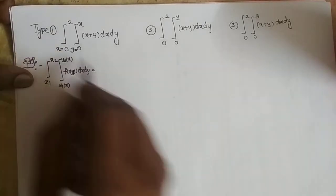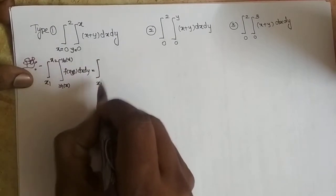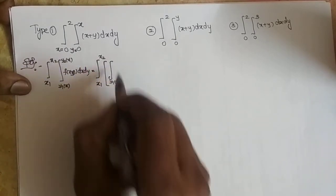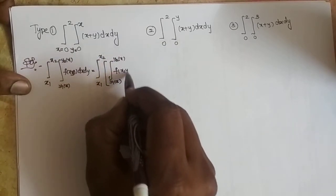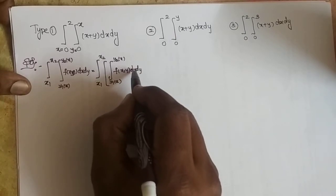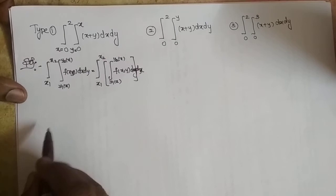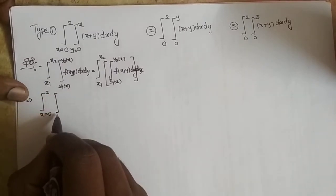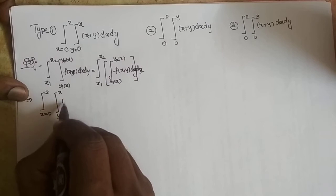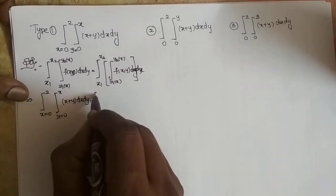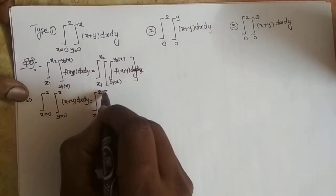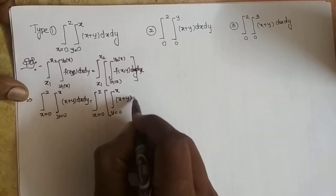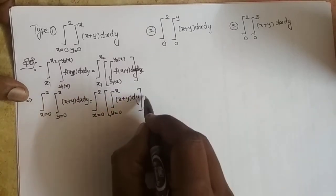So how to evaluate this: x1 to x2 are boundaries. First we should integrate with respect to y, then last dx. Similarly, our problem is: integral x = 0 to 2, integral y = 0 to x, (x + y) dy dx. Which can be written as: x taken as boundary from 0 to 2, integral y = 0 to x, (x + y) dy first, then dx.